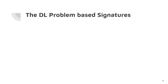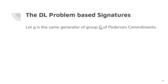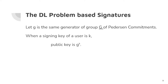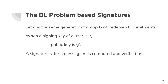Confidential transactions need signatures based on the discrete log problem — for example, Schnorr signatures or BLS signatures. Let's take the same generator that we use in Pedersen commitments. If the signing key is k, then the public key of the digital signature scheme becomes g^k. We can create the signature for a message m by taking the secret signing key and the message. Once we are given the public key and the message, we can verify the validity of the signature.